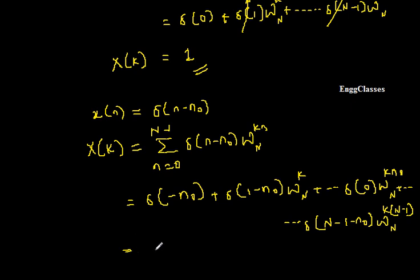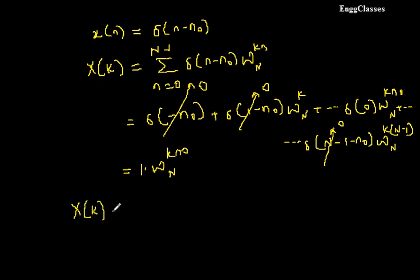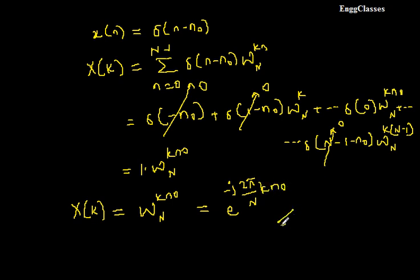Using the concept of the unit impulse signal, δ(-n₀) = 0, δ(1-n₀) = 0, and δ(N-1-n₀) = 0. Only δ(0) = 1, which gets multiplied with W_N^(k·n₀). So X(k) = W_N^(k·n₀). Substituting W_N = e^(-j2π/N), we get X(k) = e^(-j2π·k·n₀/N). This is the final answer.